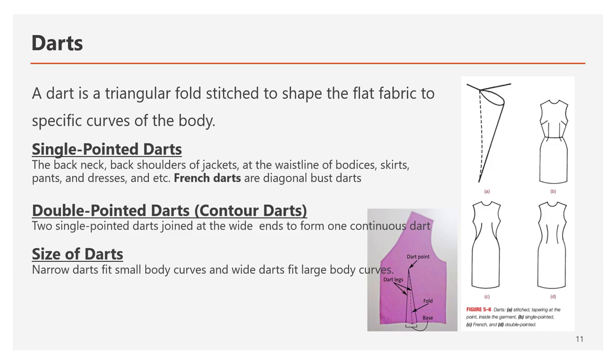Figure 5-6a shows an example of a single pointed dart and how it's stitched together. Designers can use single pointed darts vertically or horizontally. They're often used vertically at the back neck, back shoulders of a jacket, at the waistline of the bodice, skirt, pants, and dresses. They can also be used horizontally at elbows and at the bust line of women's clothing.